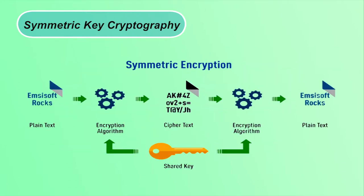In symmetric key cryptography, at the sender side the plaintext is encrypted using the shared secret key and converted to ciphertext. The receiver decrypts the ciphertext to plaintext using the same shared secret key. The shared key should be known only to sender and receiver. For example, using the suitcase analogy: you set a key to lock the suitcase and send it to your brother — you must tell your brother the key to open it. That key is your shared secret key.